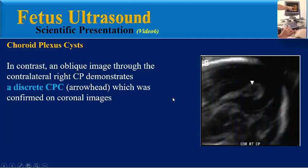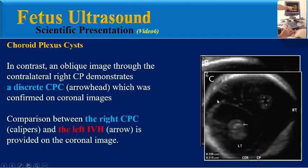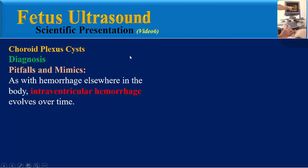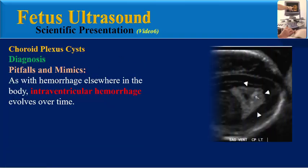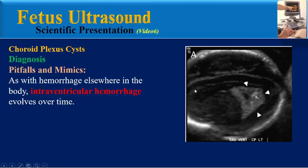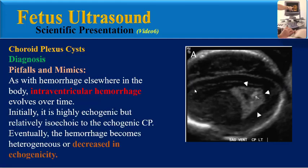In contrast, an oblique image through the contralateral right choroid plexus demonstrates a discrete cyst, confirmed on coronal image. In this coronal image, we can compare the right choroid plexus and the left intraventricular hemorrhage. As with hemorrhage elsewhere in the body, intraventricular hemorrhage evolves over time. Initially it is highly echogenic but relatively isoechoic to the echogenic choroid plexus. Eventually the hemorrhage becomes heterogeneous or decreased in echogenicity.